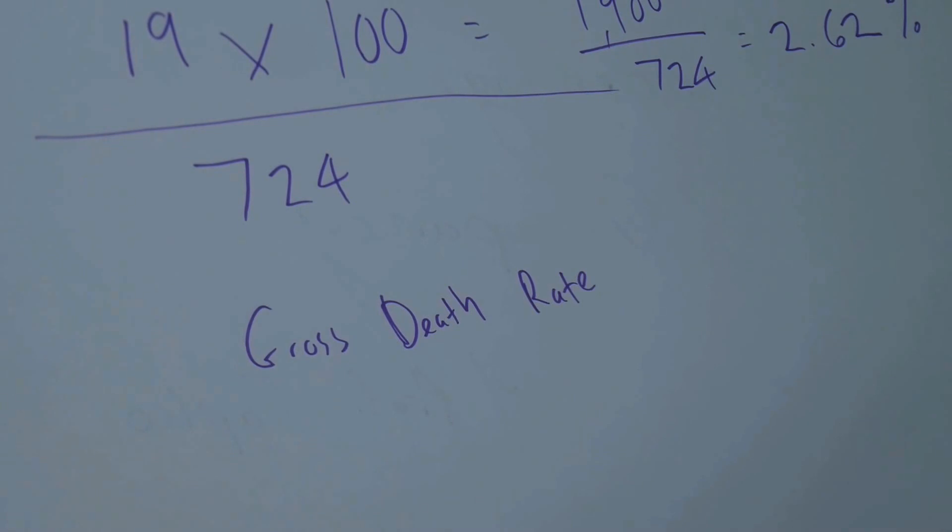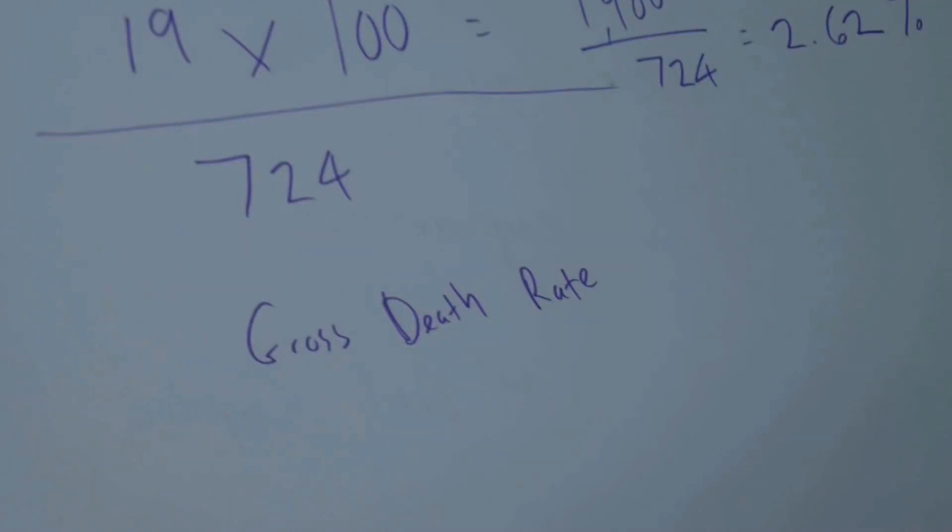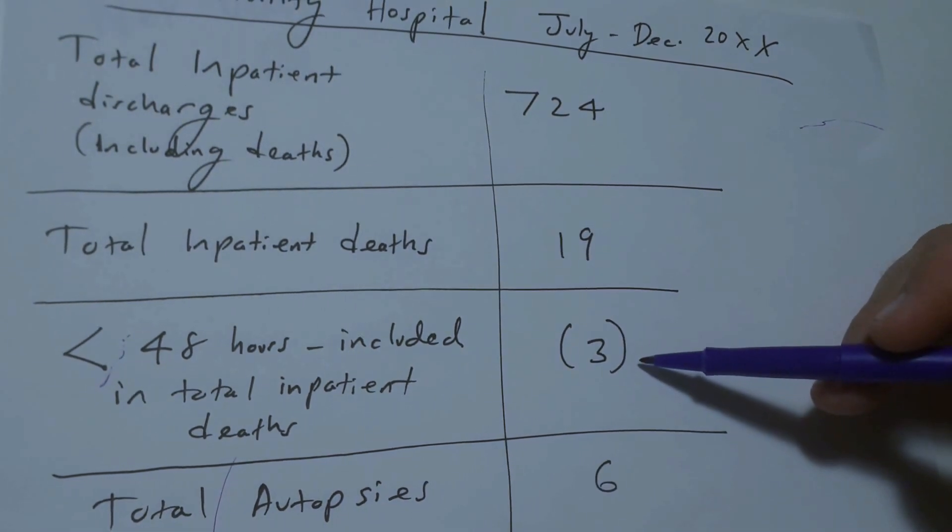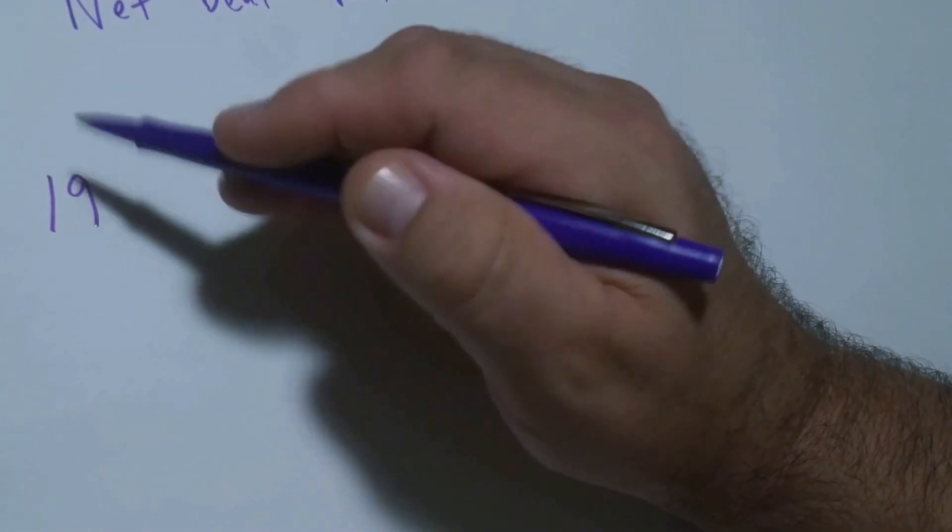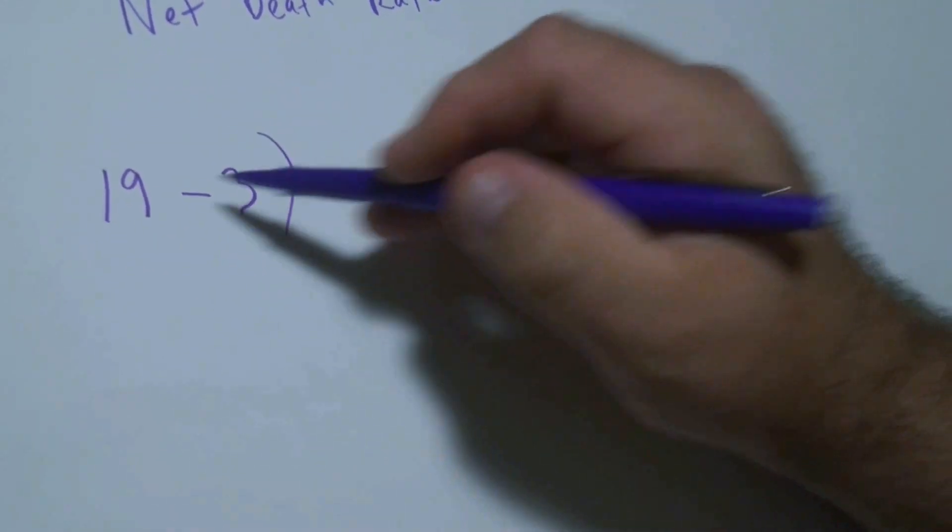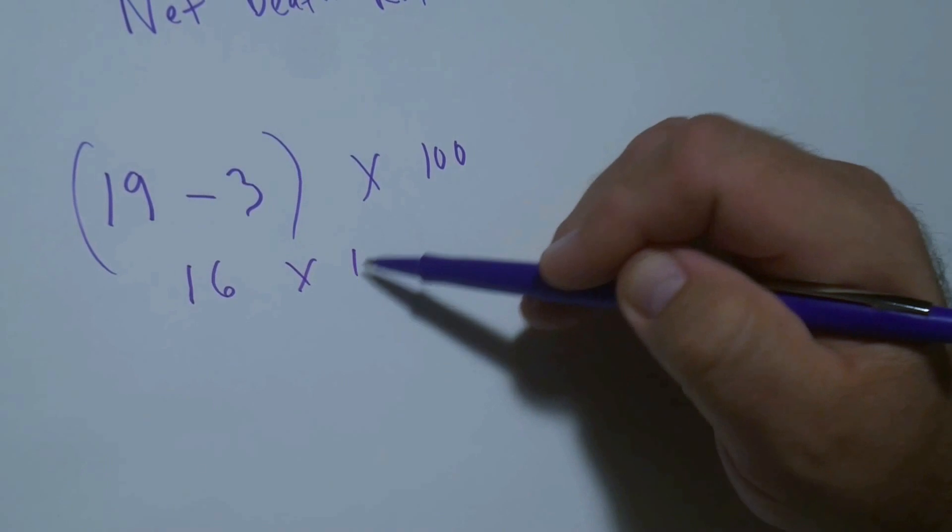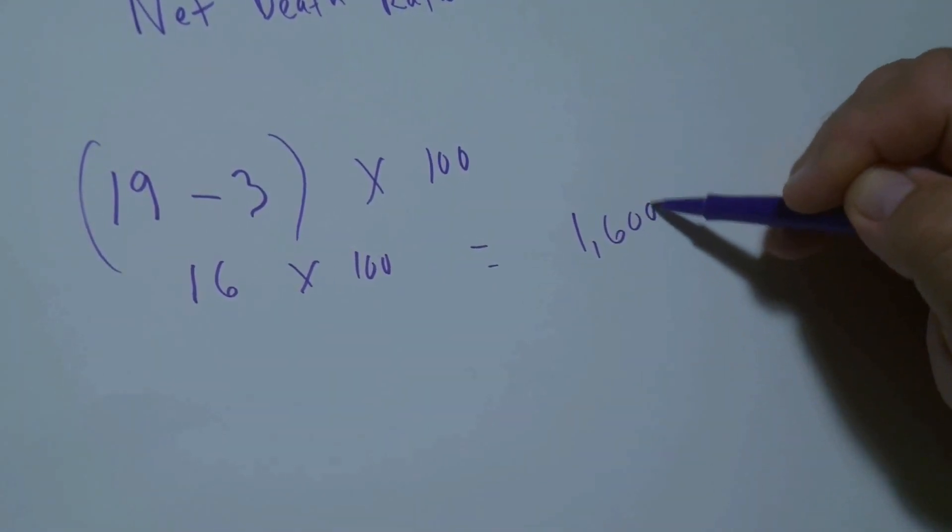So then if we're going to figure out the net death rate, we need to subtract out that 3. Remember we had mentioned the 3 for the less than 48 hours. They're included in the total inpatient deaths. We need to subtract that from our 19. So we have 19 minus 3, that number times 100. So 19 minus 3 is 16, times 100 is equal to 1600. That's our numerator.